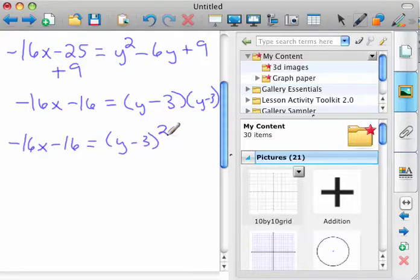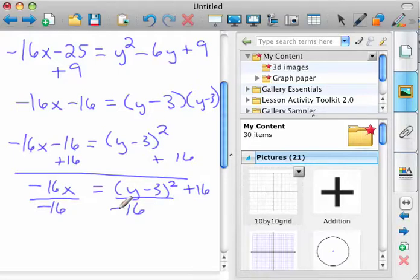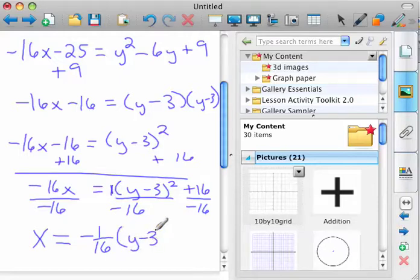So now we just need to solve for x. So I'm going to add 16 to both sides. And so negative 16x equals y minus 3 squared plus 16, and we have to have x all by itself. So we're going to go ahead and get x by itself by dividing both things by negative 16 all the way across. And so x equals negative 1 sixteenth, because there's a 1 there, y minus 3 squared minus 1.